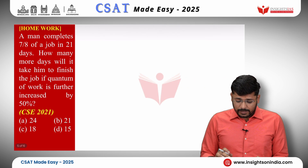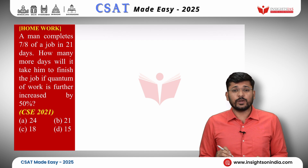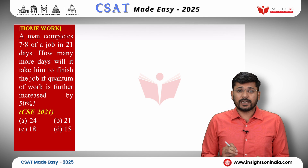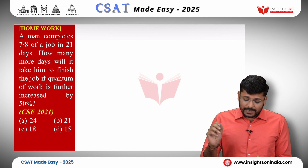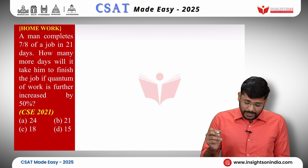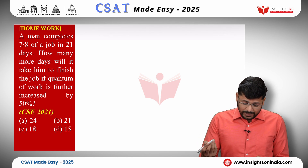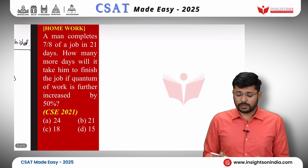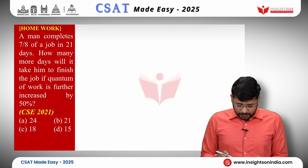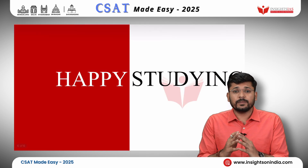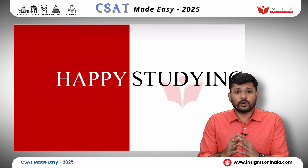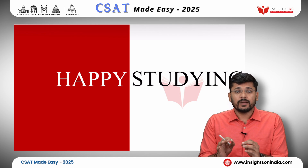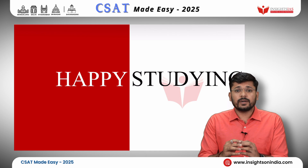Based on a similar concept, here is your homework question from the 2021 paper: A man completes 7/8 part of a job in 21 days. How many more days will it take him to finish the job if the quantum of work is further increased by 50%? This is very similar to the problem we just solved. Solve it to feel confident about this concept. If you like our videos, keep watching — every evening we will upload one video on CSAT. If you want to learn CSAT thoroughly, join our regular batch for details on the website. All the best and happy studying.